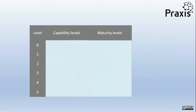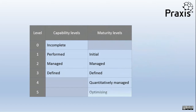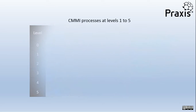An important element of the CMMI model is that it distinguishes between capability and maturity. Capability goes from levels 0 to 3 and maturity from levels 1 to 5. So how can the CMMI model be adapted for project, program and portfolio management and the Praxis Framework in particular?